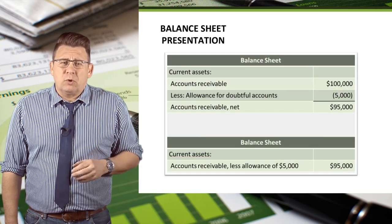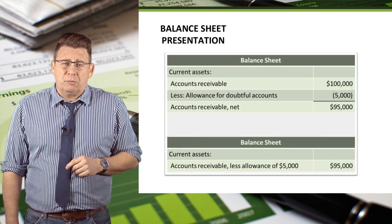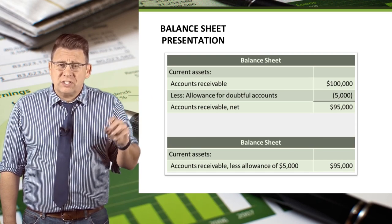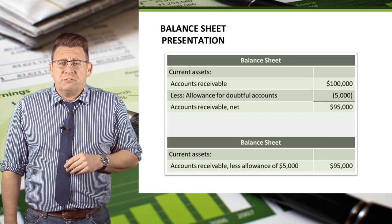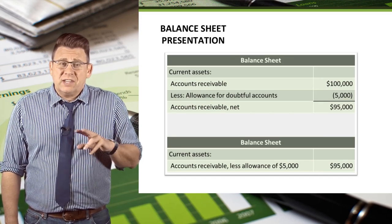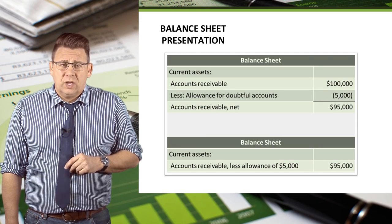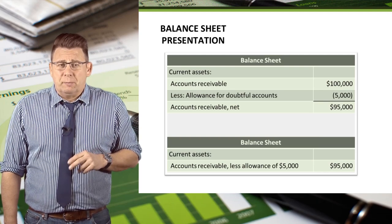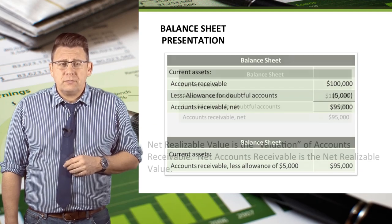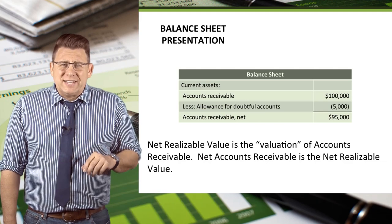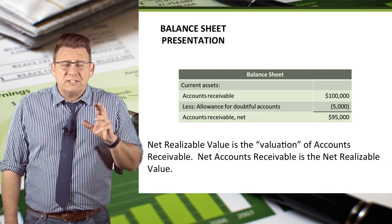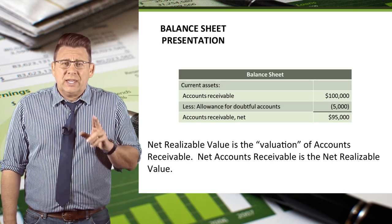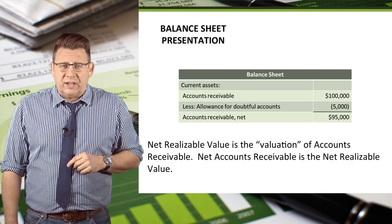Finally, there are two acceptable ways of presenting accounts receivable on the balance sheet. The first is to display the gross accounts receivable amount less the allowance for doubtful accounts, which gives us net accounts receivable. The other way is to report just the net accounts receivable amount. Net realizable value is how accounts receivable is valued on the balance sheet — net accounts receivable is the net realizable value.